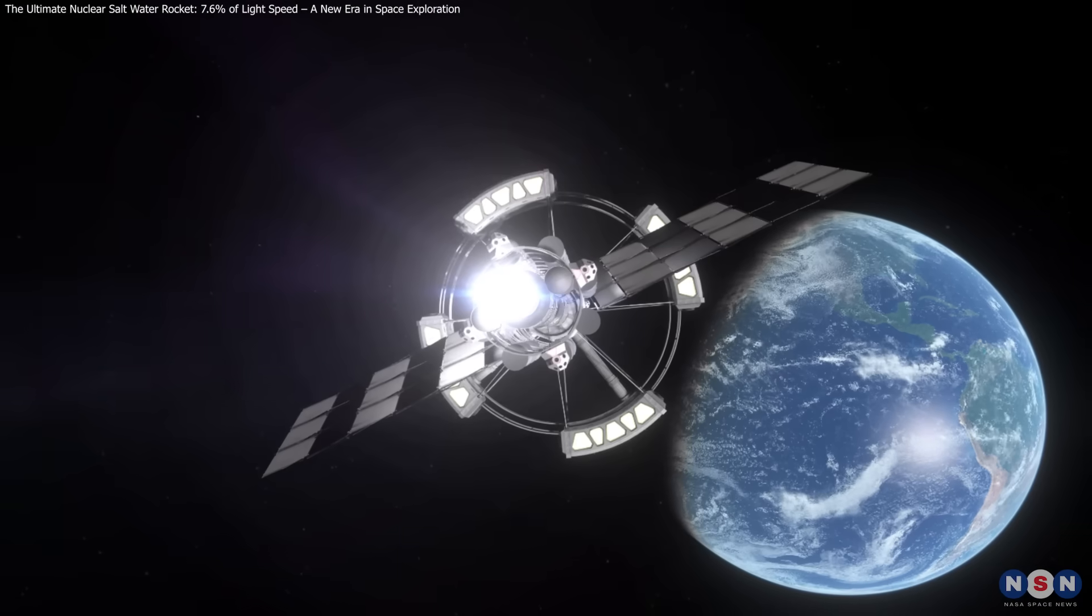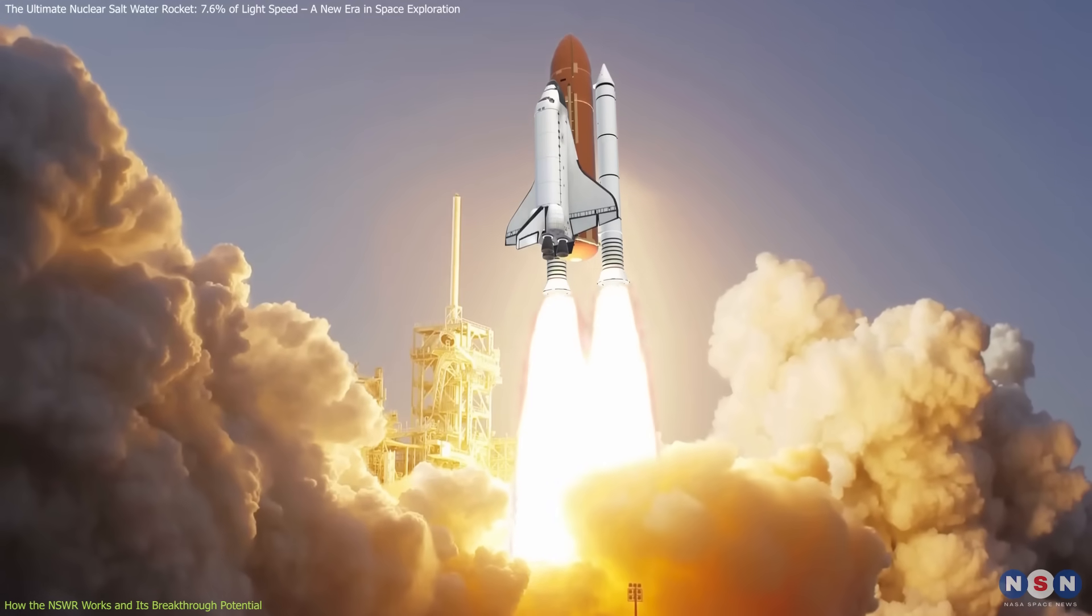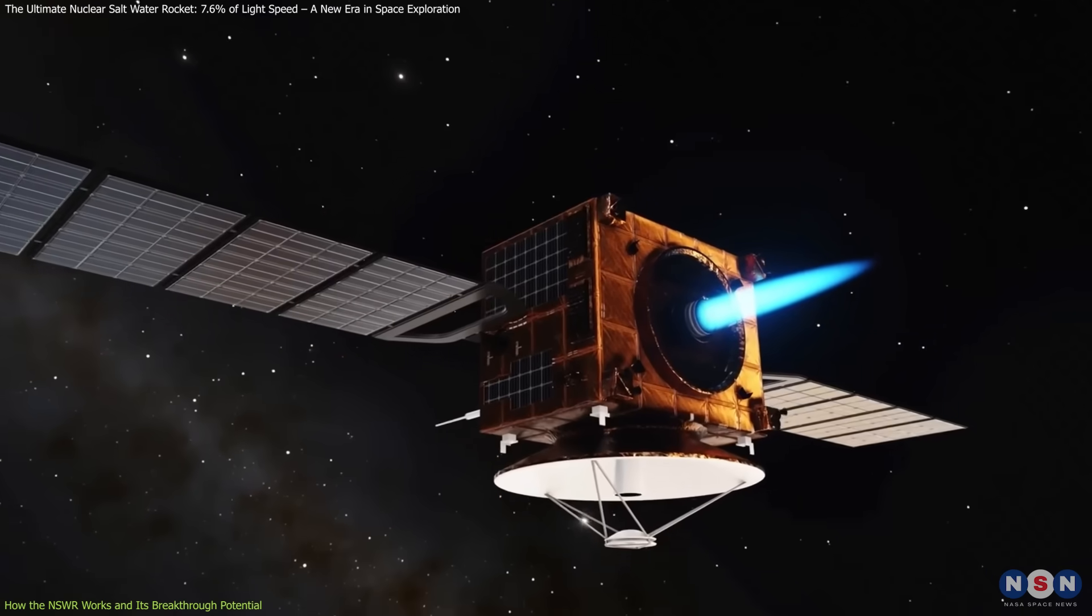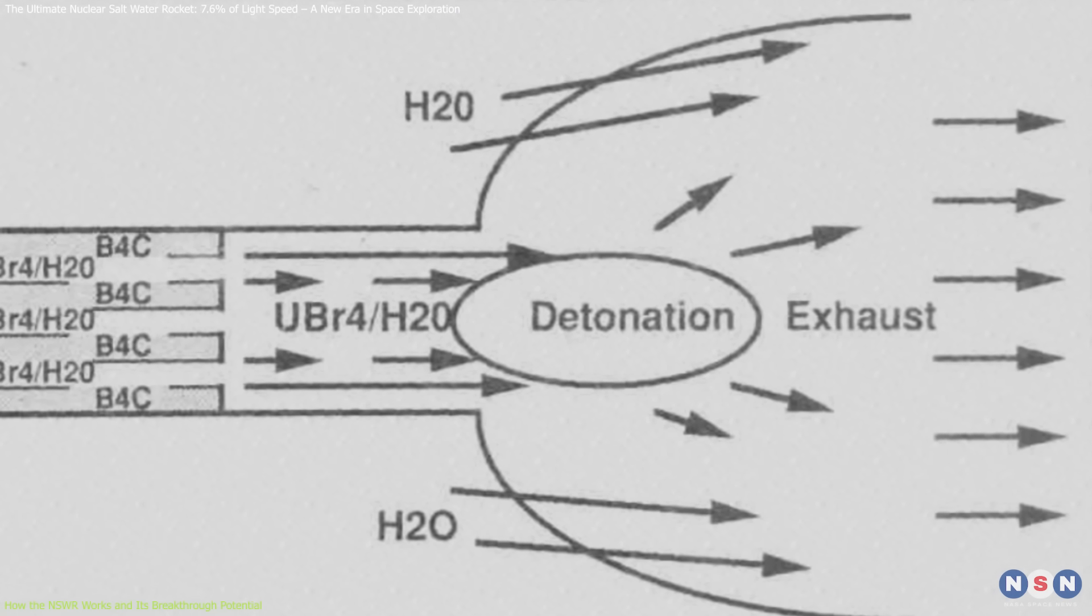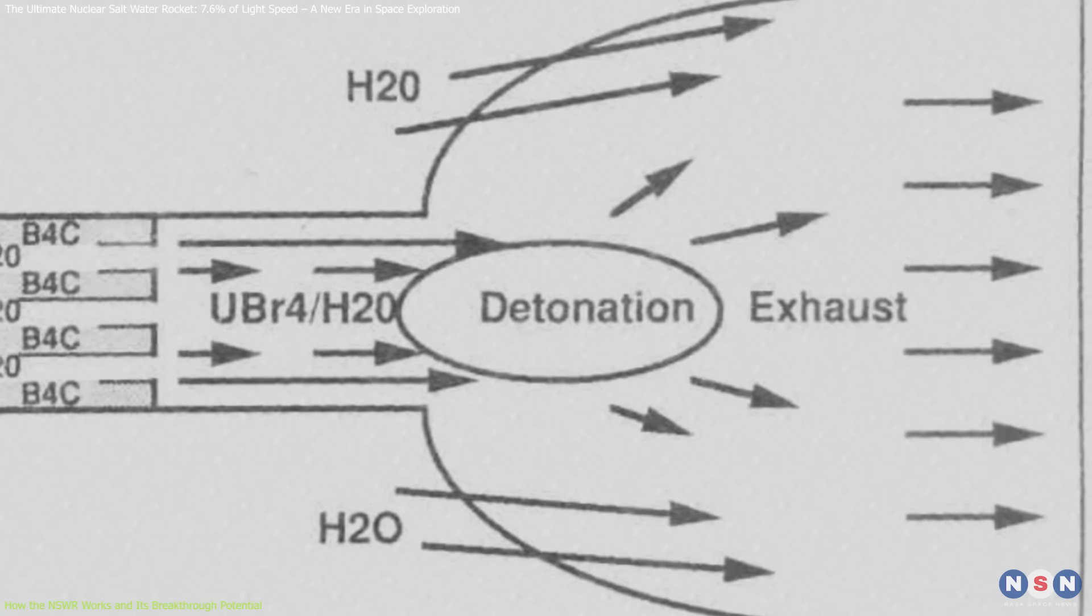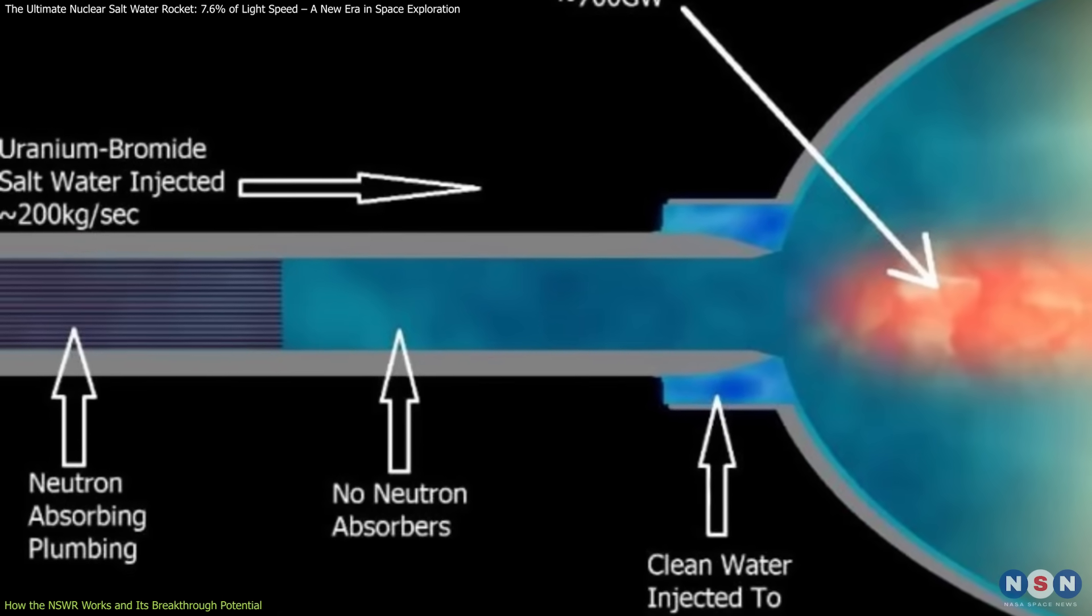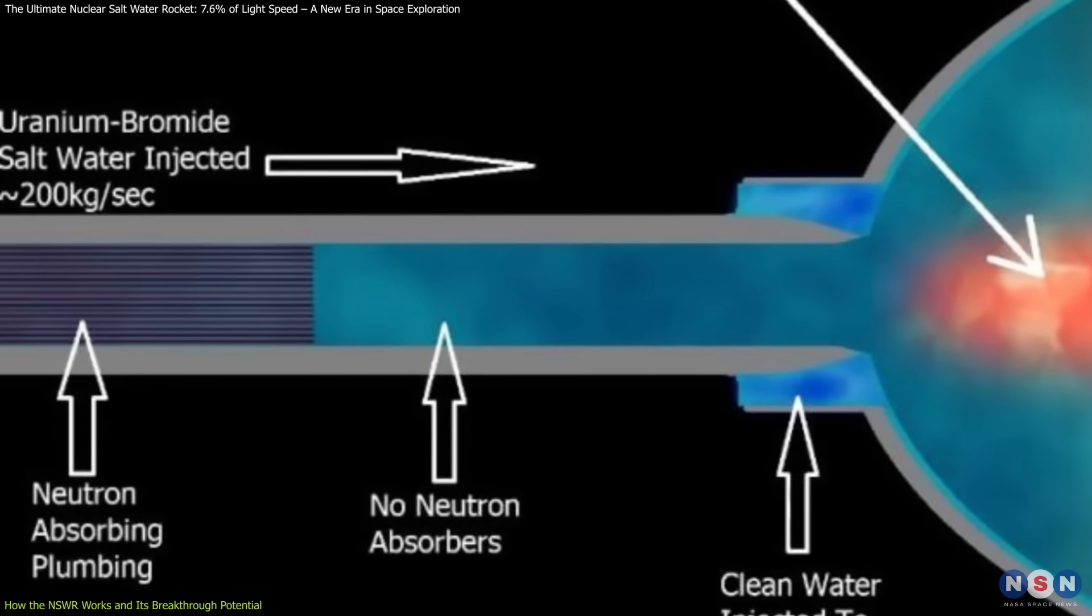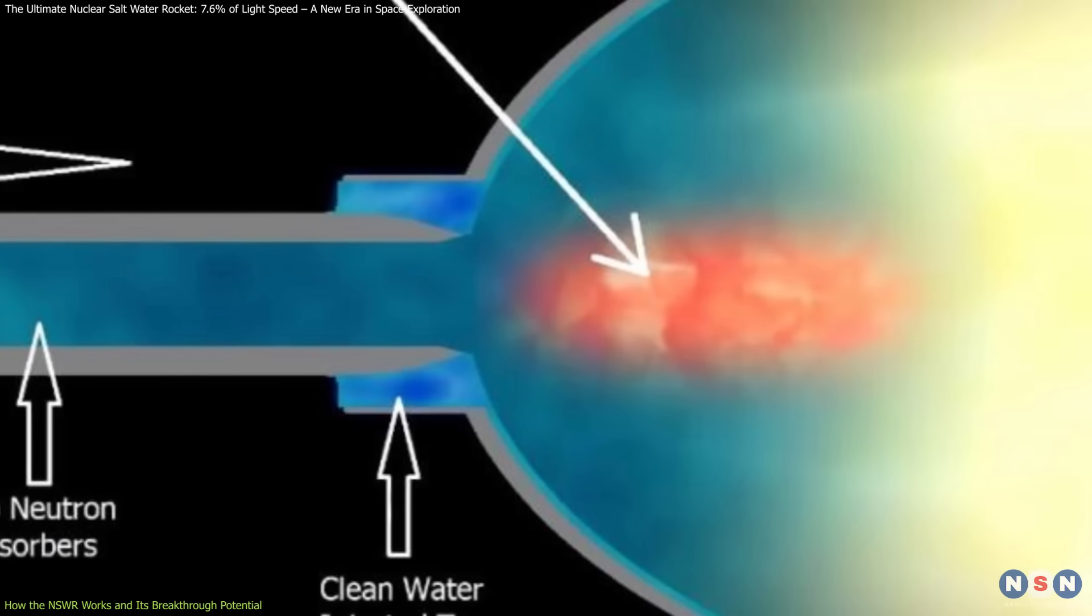The Nuclear Saltwater Rocket is unlike any propulsion system ever designed. Instead of relying on chemical combustion or solar-powered electric thrusters, it harnesses the raw power of nuclear fission in an entirely new way. At its core, this rocket uses a solution of uranium or plutonium salts dissolved in water as both fuel and propellant. This high-energy mixture is stored in boron carbide-coated pipes, which prevent premature nuclear reactions. The real magic happens when this uranium salt solution is pumped into a reaction chamber.